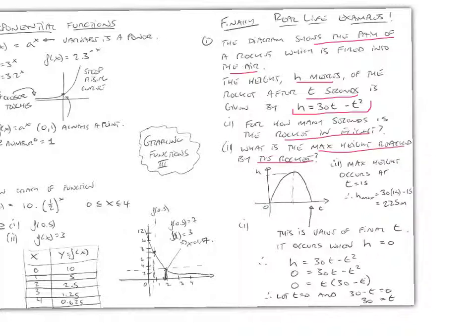So this is the value of t here, of the final t. And it occurs when h is 0. And we know where a parabola cuts the line, that's at y equals 0, or f(x) equals 0. In this case, it's h instead of y. So h, here's our equation: h equals 30t minus t squared.